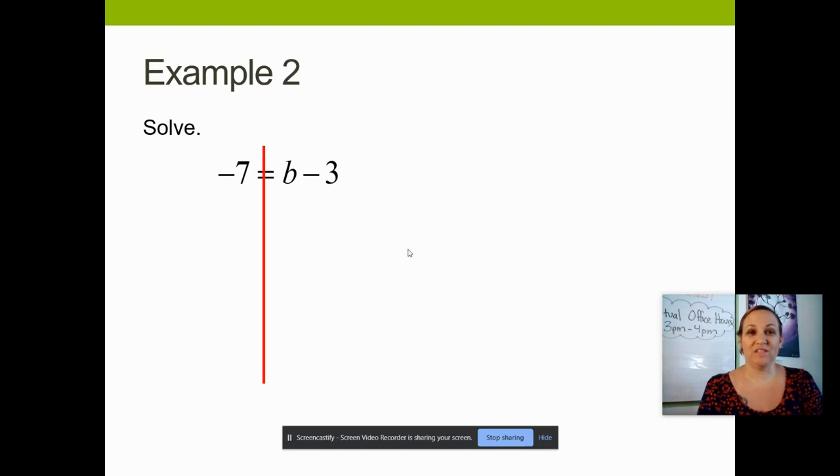My goal in this question is to get the letter b by itself. Now unlike our previous problem, my letter b on this problem is on the right hand side. So that means that I need to take my number 3 from the right side and move it to the left side away from the letter b. My number 3 is being subtracted right now. It says b minus 3 and the inverse of subtracting is adding.